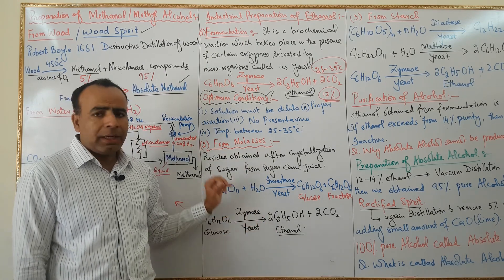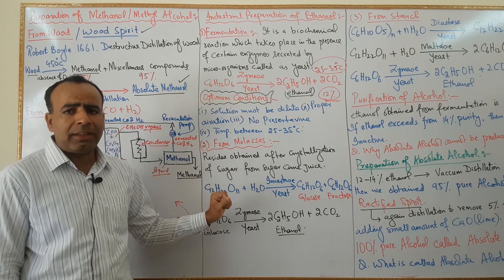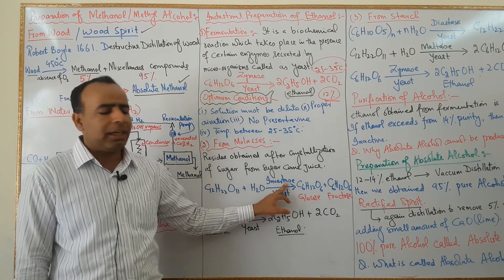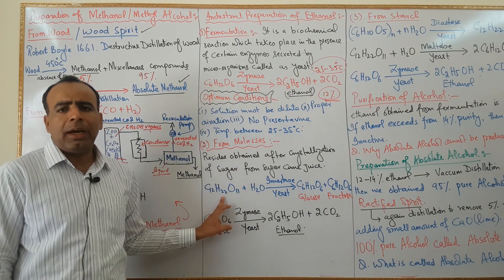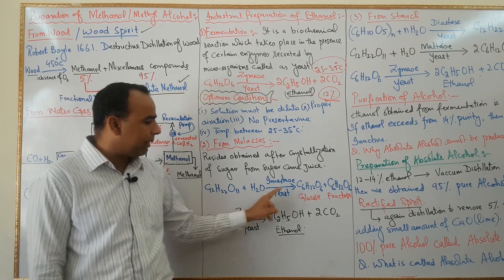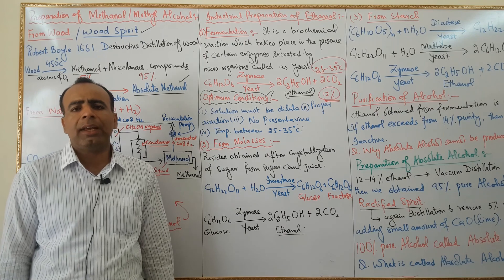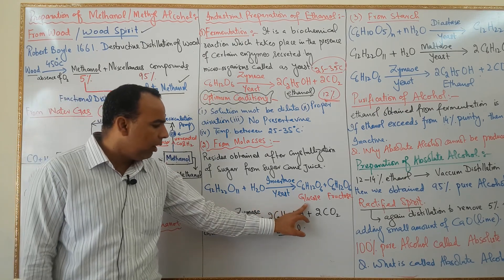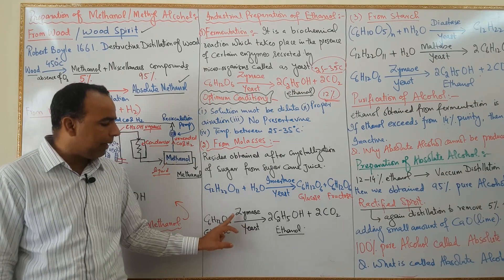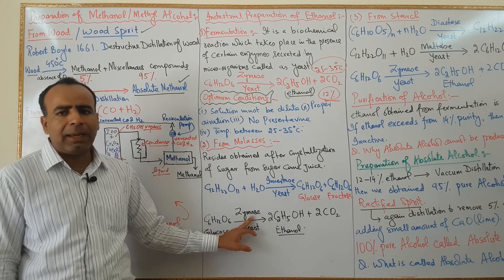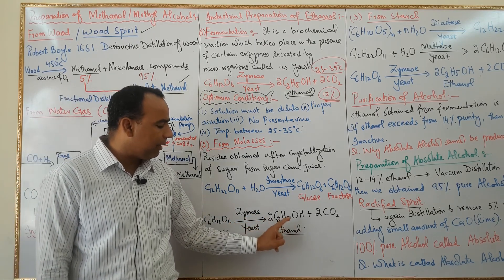For preparation from molasses, we will dilute it and add yeast enzyme. From yeast we will get invertase enzyme. This invertase enzyme will convert the sucrose (molasses, C12H22O11) into glucose and fructose, both having the formula C6H12O6. Then this glucose will be further converted — in the presence of zymase enzyme obtained from yeast — into ethanol and carbon dioxide.